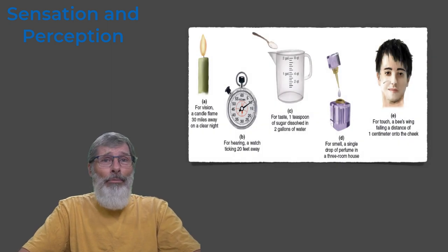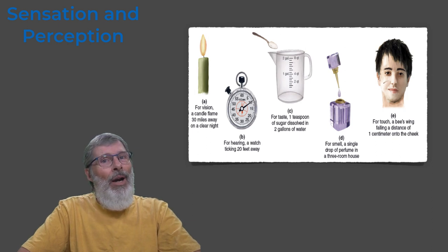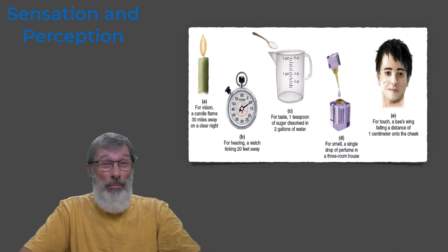So here's a list of some of the absolute thresholds for each of our senses. For example, vision: a candle flame viewed from 48 kilometers on a clear dark night. Hearing: a watch ticking from six meters away in a quiet room. Now six meters is around about 18 to 20 feet in that ballpark.